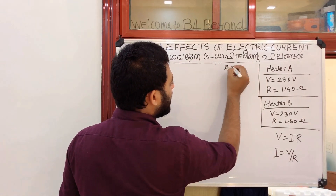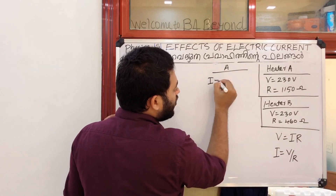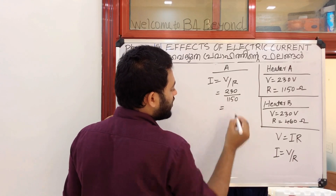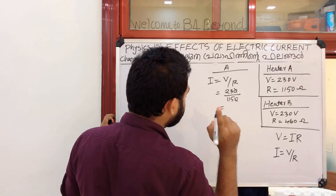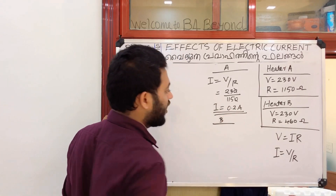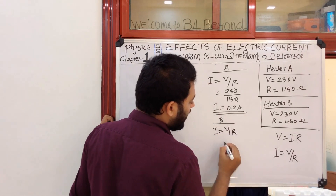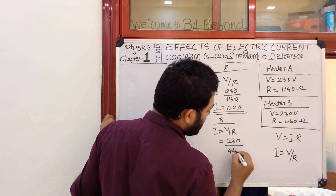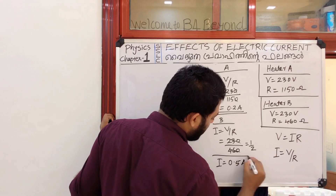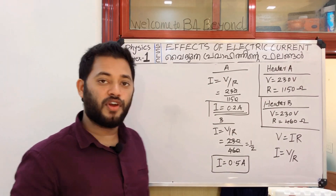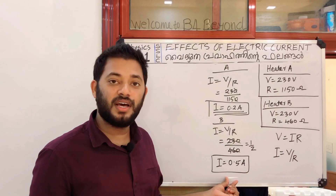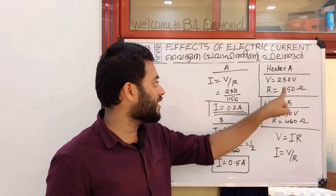Using I equals V by R: V is 230 divided by 460. So 230 divided by 460 equals one-half, meaning I equals 0.5 Ampere. The current is 0.5 Ampere.